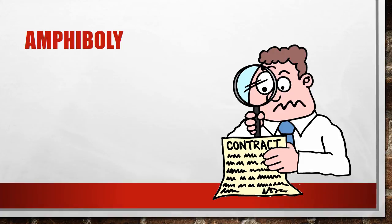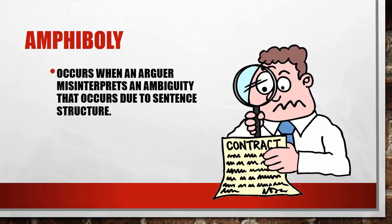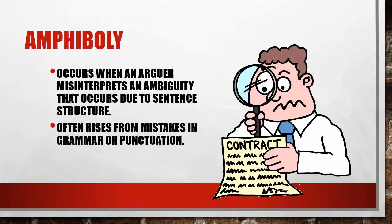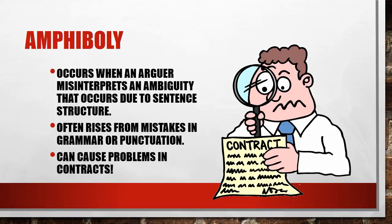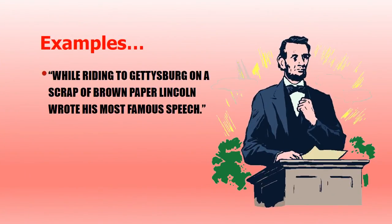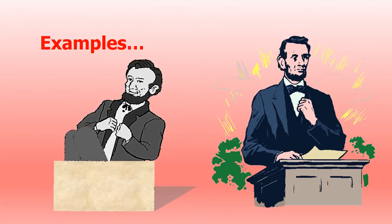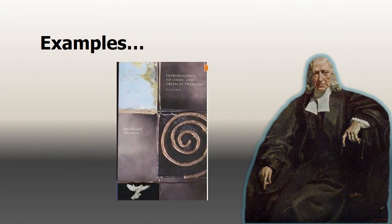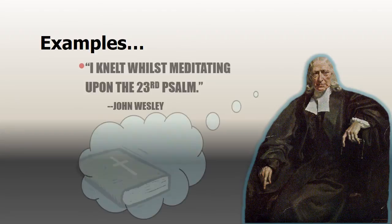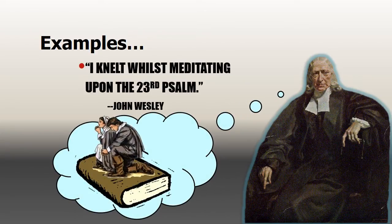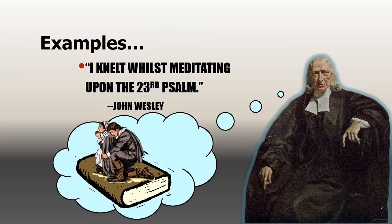But if you think there's an ambiguity in an argument and you can't locate it in a single word, maybe the arguer misinterpreted an ambiguity due to sentence structure as a whole — that's called amphiboly, and it often happens due to grammar or poor punctuation. If you have a contract, read every sentence carefully because some sentences may take on multiple meanings if not worded precisely. Try this example: while writing to Gettysburg on a scrap of brown paper, Lincoln wrote his most famous speech. The sentence structure is ambiguous enough to suggest Lincoln was writing on a scrap of brown paper.